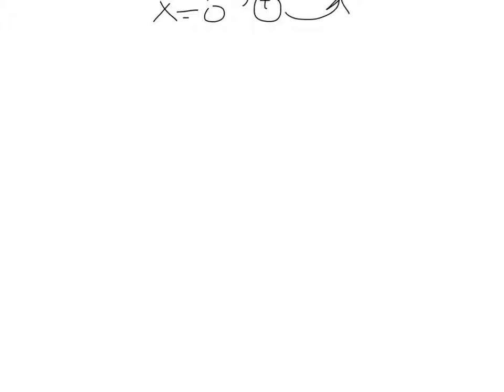So, likewise, we have cancellation rules. What if I have log base 9 of 9 to the 2x minus 1? Log base 9 and 9 cancel each other out. So you would end up just getting 2x minus 1. This kind of brings us to our exponent rule.